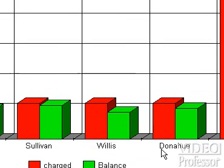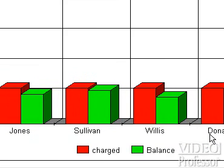This chart is simple and to the point. We have two different colored bars here. The red bar represents the total amount charged to each parent, which is the first set or series of data charted. The green bar represents the second series of data charted — the remaining balance for each parent. The higher the balance bar is in relation to the charged bar, the more money a parent owes.